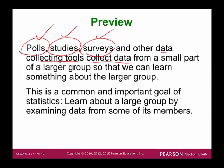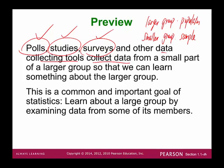This is very important: collecting data from a smaller part of a larger group so you can learn something about that larger group. The larger group is what we call the population, and the smaller group is what we call a sample. The sample comes from the larger group. Basically, you learn about the population by using a sample — by examining data from some members, which is a subset of the population.